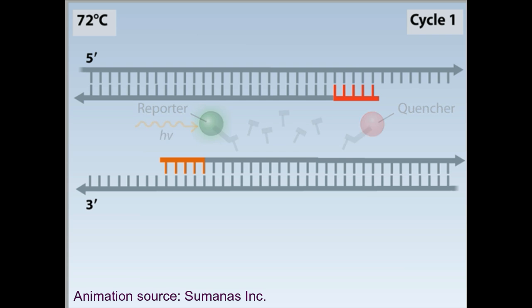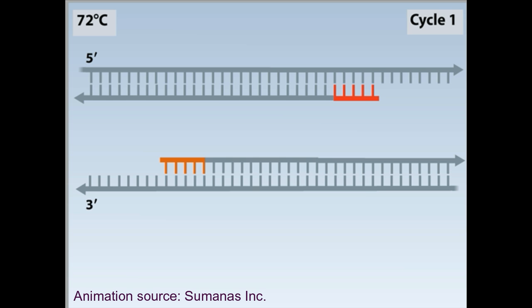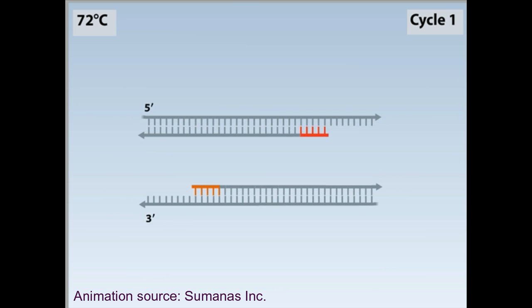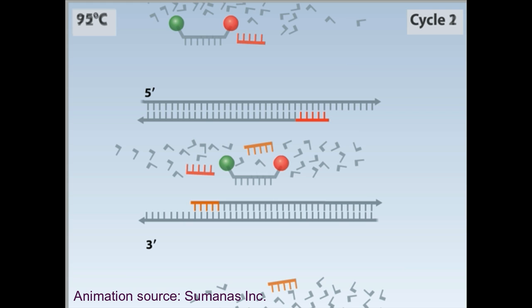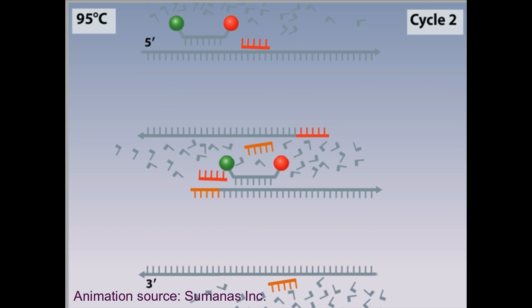In the next PCR cycle, twice the number of template DNA molecules are available for the reaction. Again, the probe molecules anneal to the templates along with the primers.